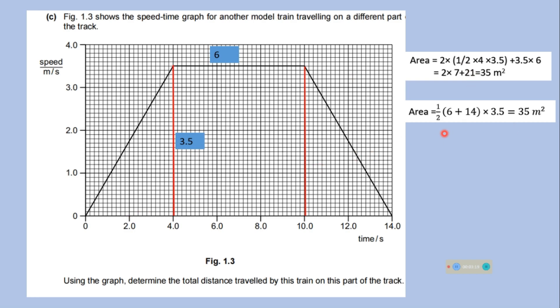Or either you can use the formula of calculating the area of trapezium. And the area of trapezium is 1 by 2. Multiplication of these 2 length. This is 6 and the length is 14. Multiply by the perpendicular distance between 2 lengths. So it is 35 meter square. Well you can pause the video and please check all the calculations.